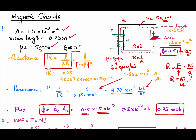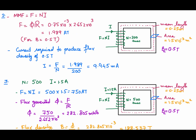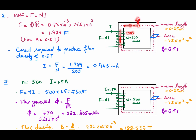Now let's calculate how much current is required to establish a flux density of 0.5 tesla in this arm of the core, given the cross-sectional area of 1.5×10⁻³ m², if the winding has 200 turns. The current establishes the magnetomotive force which, according to the reluctance of the path, establishes the required flux.